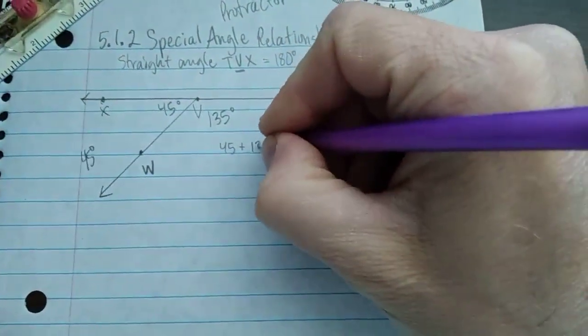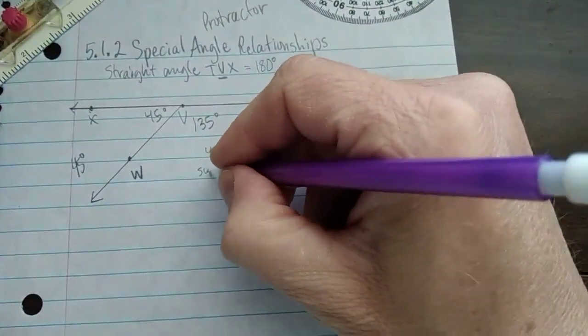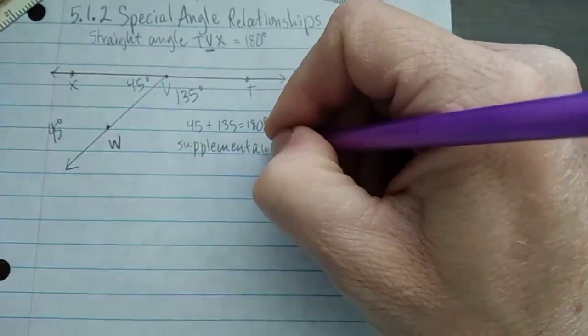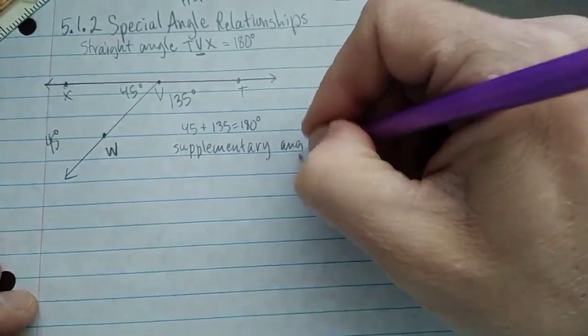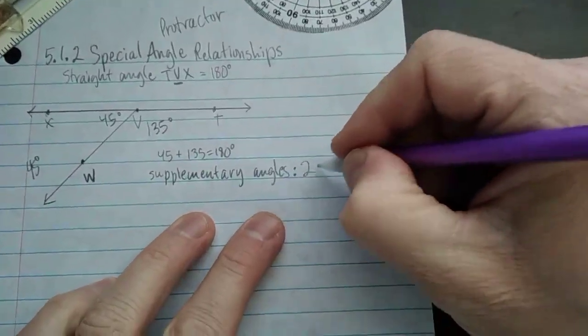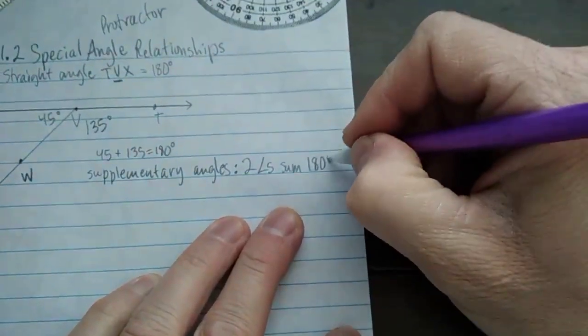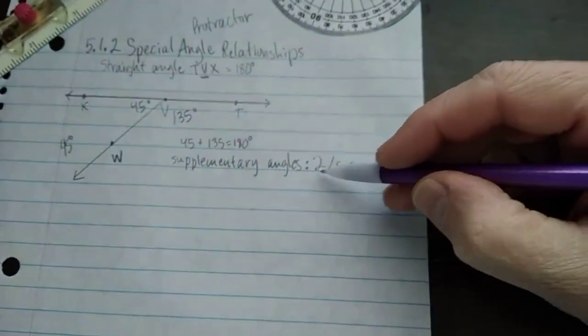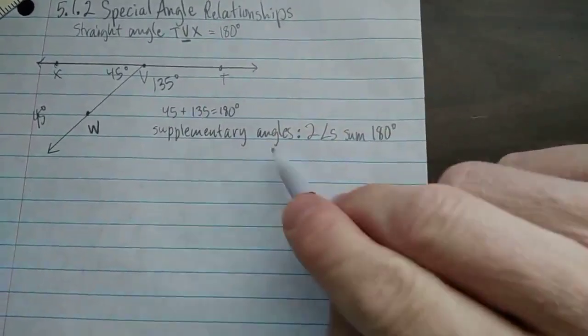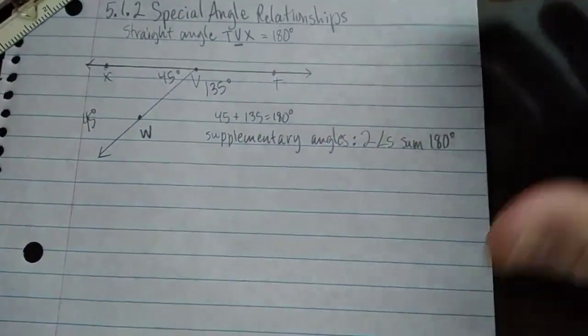So 45 plus 135 equals 180. These are called supplementary angles. And this is one of your vocabulary terms. Exactly two angles that have a sum of 180 degrees. Not three angles, because sometimes people go, oh, there are like four angles there. If you add them all up, it equals 180. No, our definition of supplementary angles is two angles that have a sum of 180 degrees.